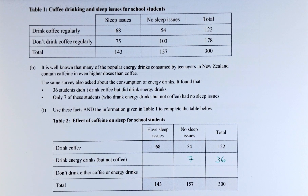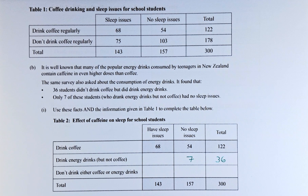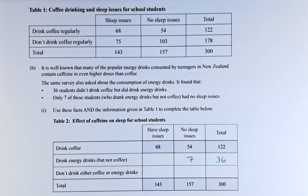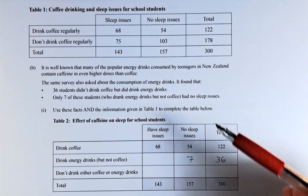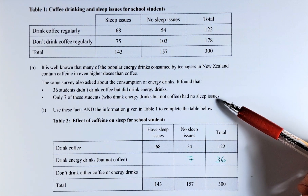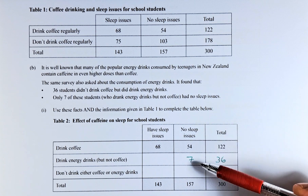It is well known that many popular drinks consumed by teenagers in New Zealand contain caffeine in even higher doses than coffee. The same survey also asked about the consumption of energy drinks. It is found that 36 students did not drink coffee but did drink energy drinks. Only 7 of those who drank energy drinks but not coffee had no sleep issue.